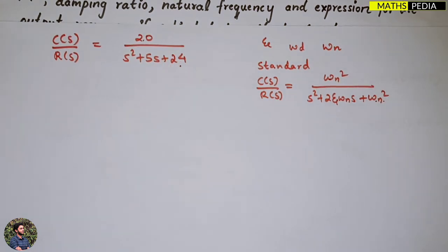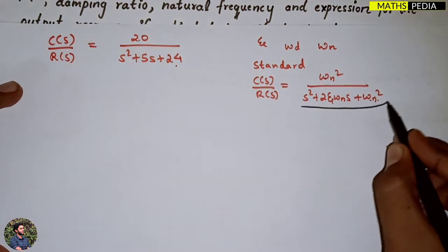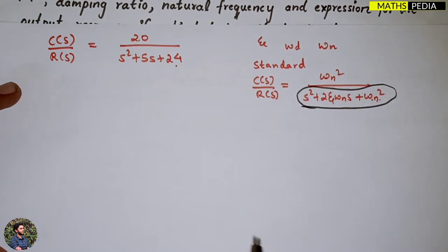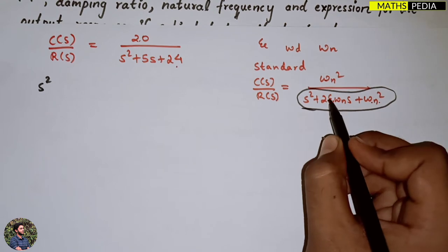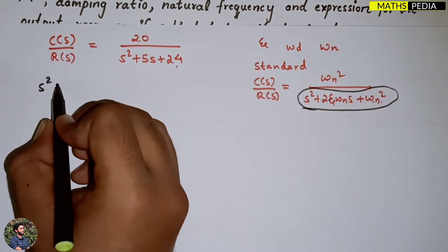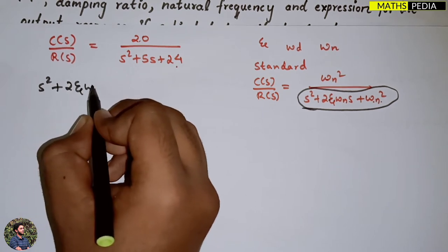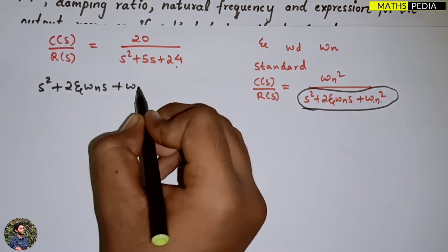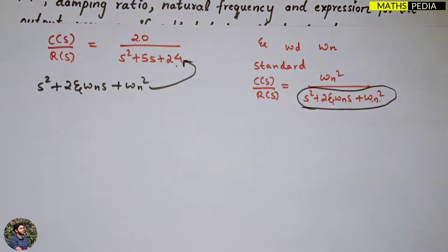Always remember: when the transfer function is not in standard form, you must use the characteristic equation — that is, the denominator part. Always compare the denominator s²+2ζωns+ωn² with the denominator of the given transfer function. Whenever you get confused, consider the denominator, which is the characteristic equation.